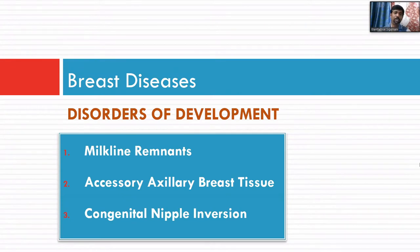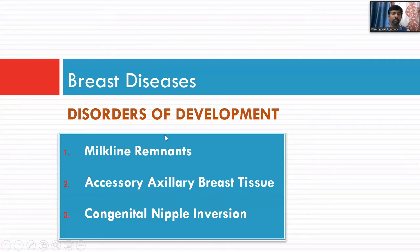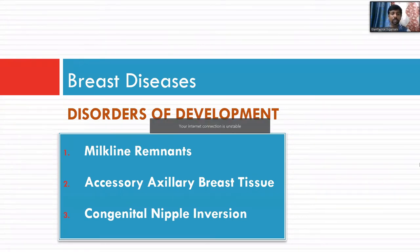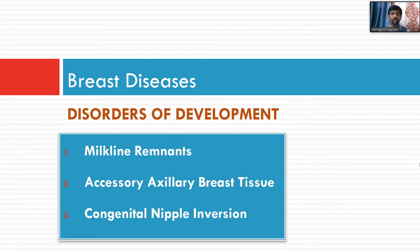Coming to the disorders of development: milk line remnants, accessory axillary breast tissue, and congenital nipple inversion. You need to be aware of all these developmental disorders. Milk line remnants can lead to polythelia — multiple nipples along the milk line. The clinical significance of accessory axillary breast tissue is that by knowing it you can determine whether a lesion arising from the axillary region is from the lymph node or from the breast, helping differentiate primary breast disease from metastatic lymph node involvement.